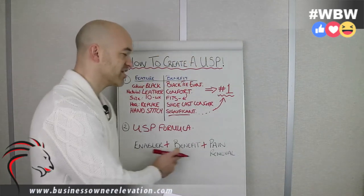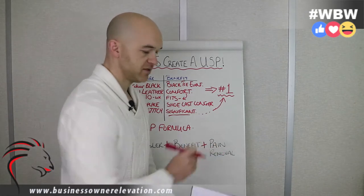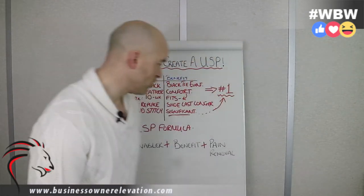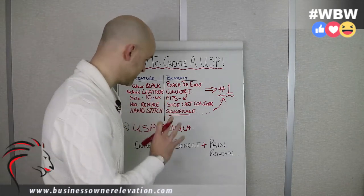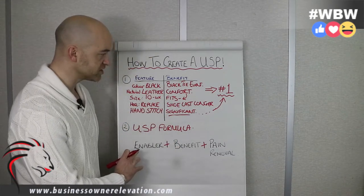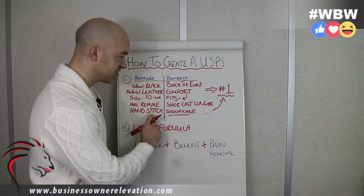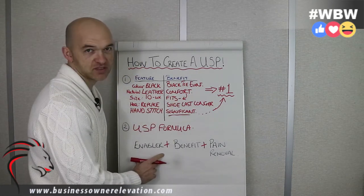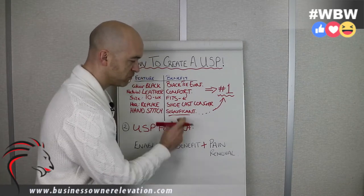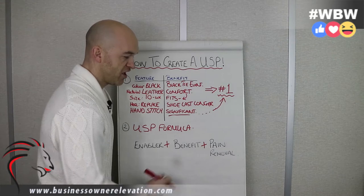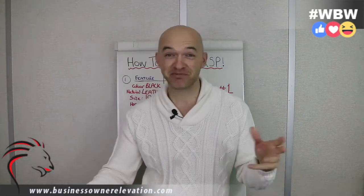So as you can see, that's a real USP — it incorporates all of these key elements in the USP formula. So let's take it back to the black shoes. This one's really going to test me because it's on the fly. So we could say: these are the only hand-stitched black leather shoes that allow the wearer to look and feel more significant, without looking like everybody else in cheap shoes.